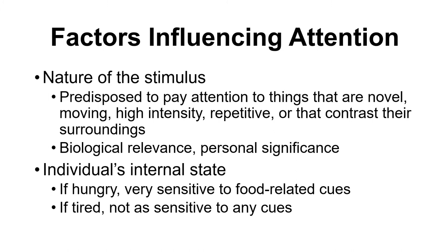We are predisposed to pay attention to biologically relevant things — things that are new, that are moving, that are high intensity or repetitive, or in stark contrast to their surroundings. These can include colorful things, or things relevant to our current moment: if we're hungry we notice food, or if we're walking through a crowd and see an attractive face, those would all draw our attention.